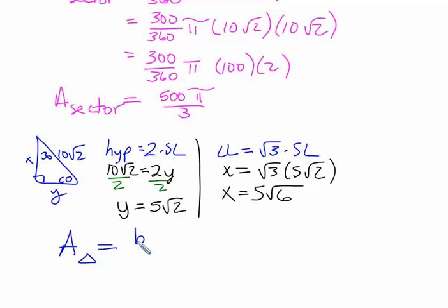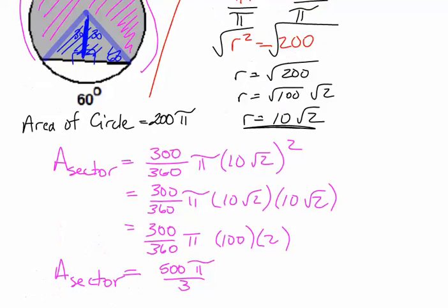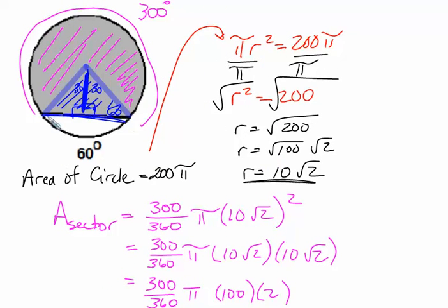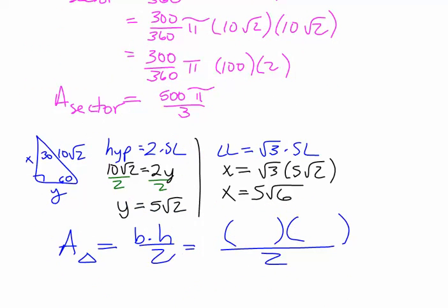So the area of the triangle is a base times a height divided by 2. Now let's go back up and look at the picture. So the full base is really 2 of these items right here, which is the y. 2 y's would be 10 radical 2 for the base. The height is x, which is 5 radical 6.